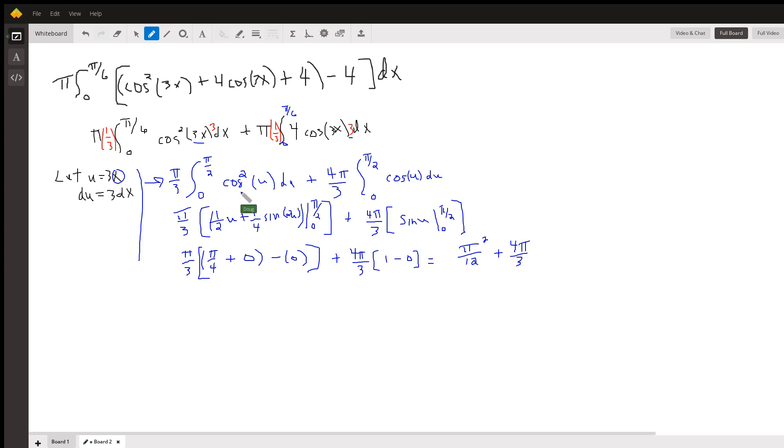And now I have to use that identity or that formula for the antiderivative of the cosine squared of u. Here it is, evaluated from 0 to pi over 2. The antiderivative of cosine, of course, is sine, still from 0 to pi over 2.